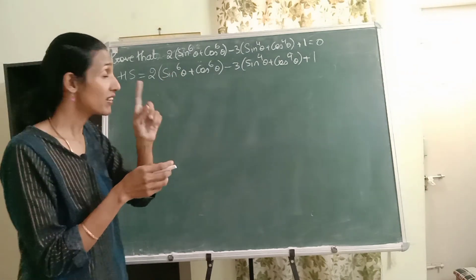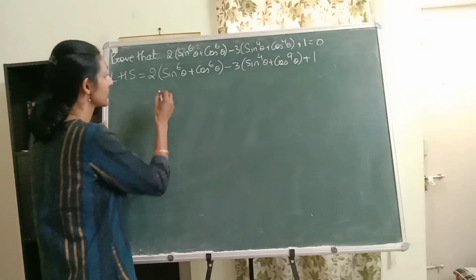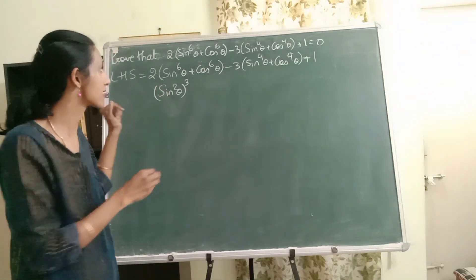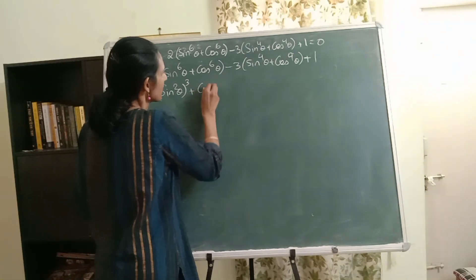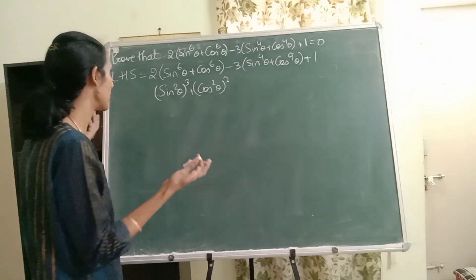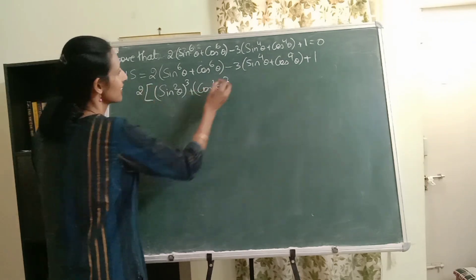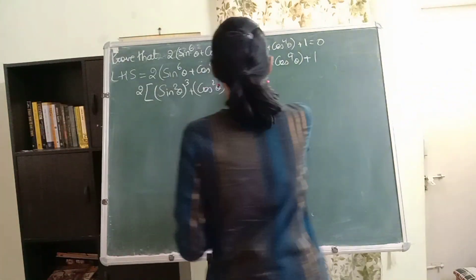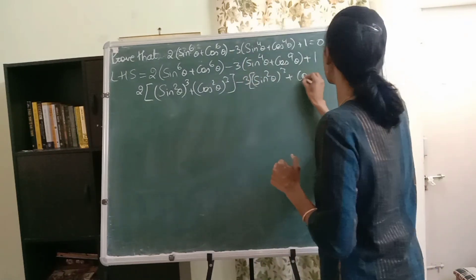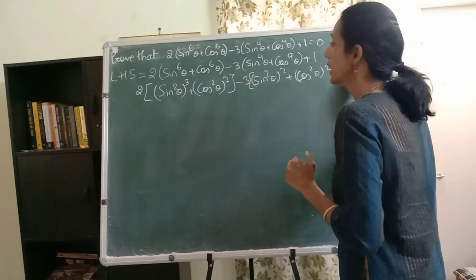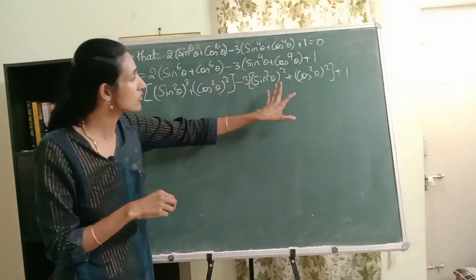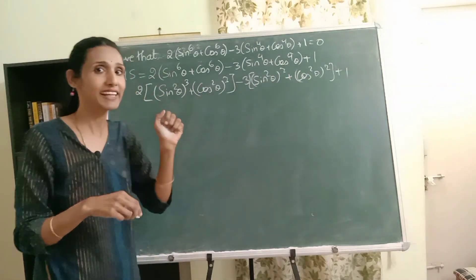This sine raised to 6 we can write it in terms of sine square. I can write this as sine square theta the whole cube exponents. See here also cos square theta the whole cube. I don't know how this will help me but definitely let's try. There's no harm in trying. Here also I have sine raised to 4. Let me write that also as sine square theta the whole square. Now did you see this is looking like a cube plus b cube, this is looking like a square plus b square. Don't we have identity? a cube plus b cube.